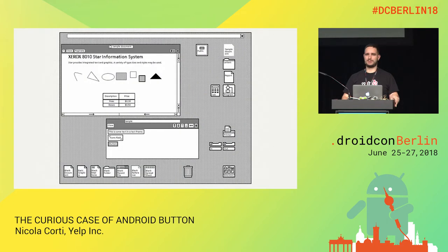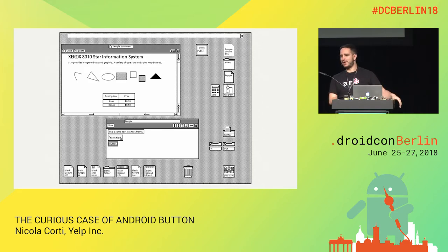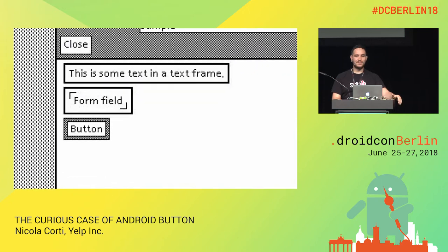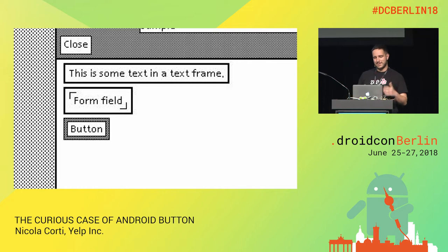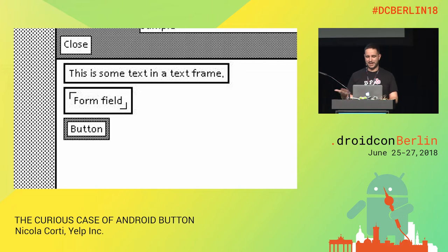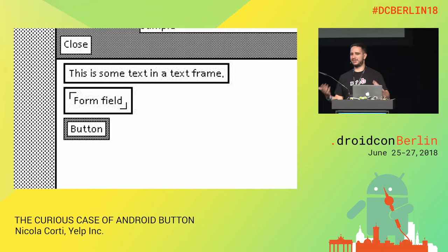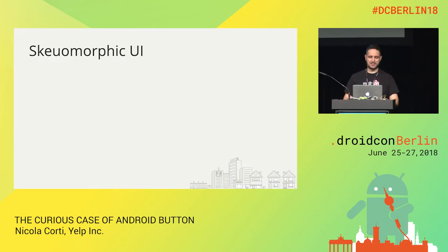It makes sense to start from here. This is the Xerox 8010. If you go on Wikipedia and search for GUI, it's the first screenshot you find. It's the first example of a graphical user interface. And if we zoom in, you'll see there is actually a button. So this concept of a button is pretty old and was already established — still just a rectangle with some text inside. Obviously we had some iterations, things evolved a bit, and some years ago we ended up with skeuomorphic UI.